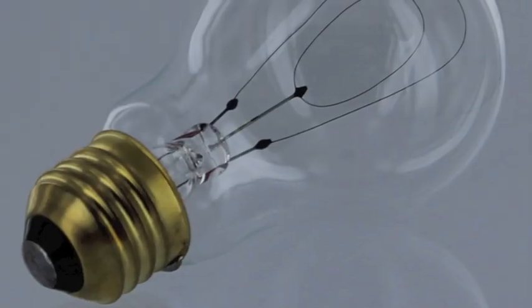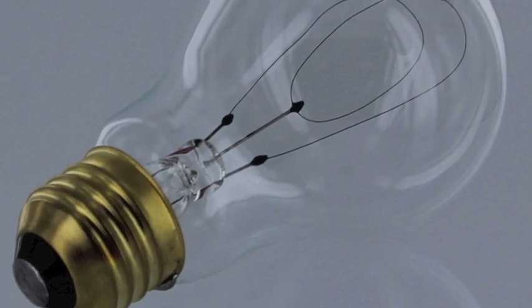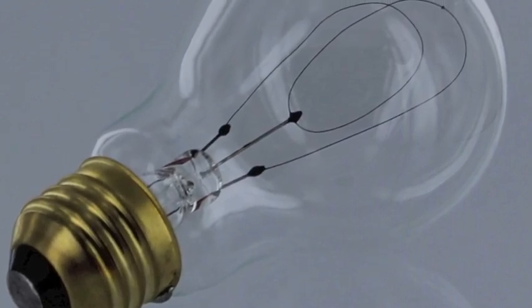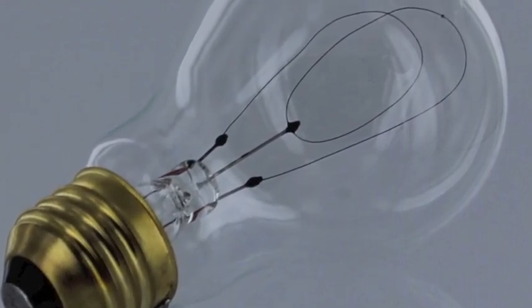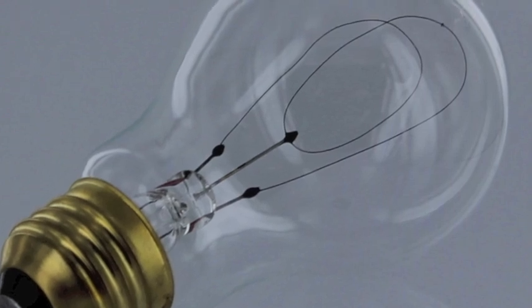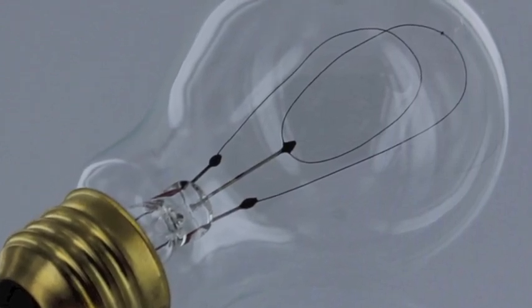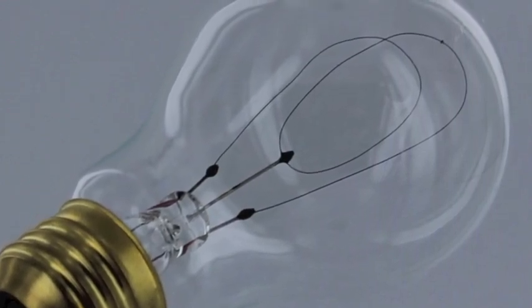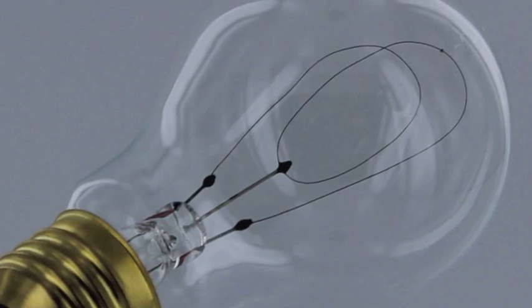The electricity and magnetism bulb demo uses a special Victorian bulb with a floppy or movable filament. Conventional light bulbs will not work for this demonstration since their filaments are supported and secured within the bulb itself.